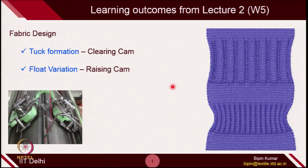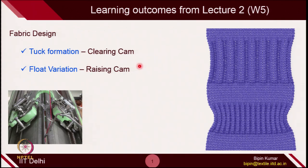A quick recap of what we are going to learn: you will learn how to make the tuck loop with the help of clearing cam, and how to make the float loop with the help of raising cam to introduce floats in the fabric structure. The machines I am going to use are V-bed machines, which have 2 beds — front bed and back bed.